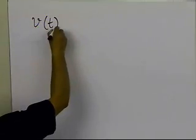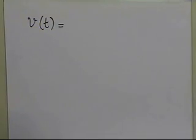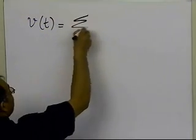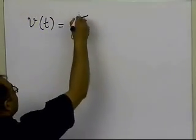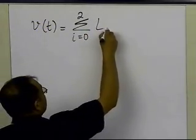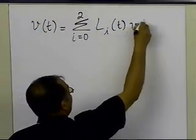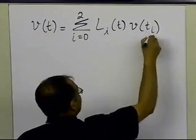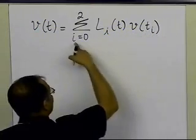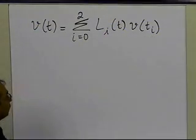According to Lagrangian interpolation, the velocity profile is the summation from i=0 to n, where n=2 because it's a quadratic interpolant — a second-order polynomial — of the weighting functions L_i(t) times the values of the velocities at the three data points, i=0, 1, 2.